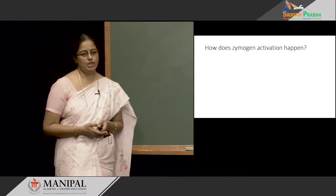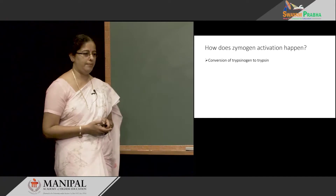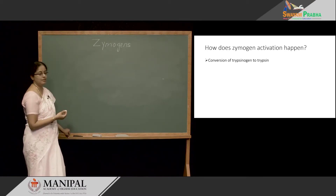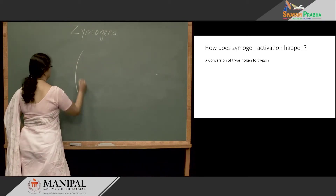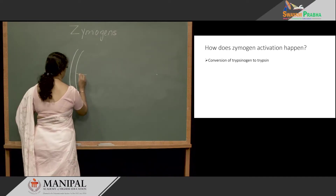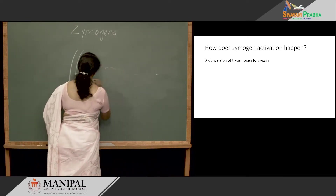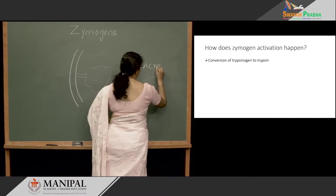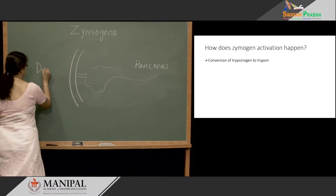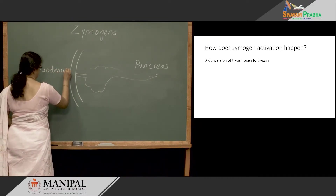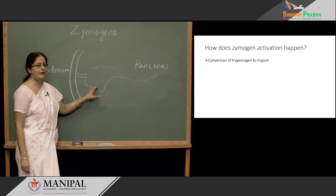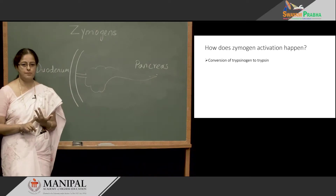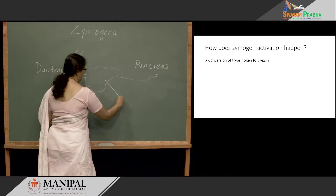Let us see how Zymogen activation happens, taking conversion of trypsinogen to trypsin as an example. The organ that produces this Zymogen trypsinogen is the pancreas. Pancreatic Zymogens produced there include trypsinogen, chymotrypsinogen, proelastase, carboxypeptidase A, and carboxypeptidase B. They are all produced in the pancreatic acinar cells.